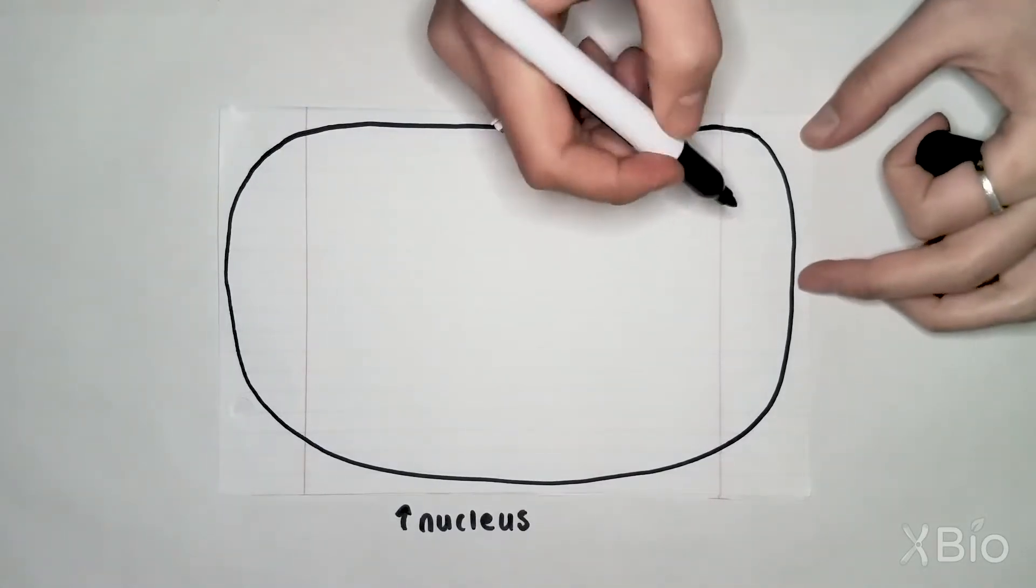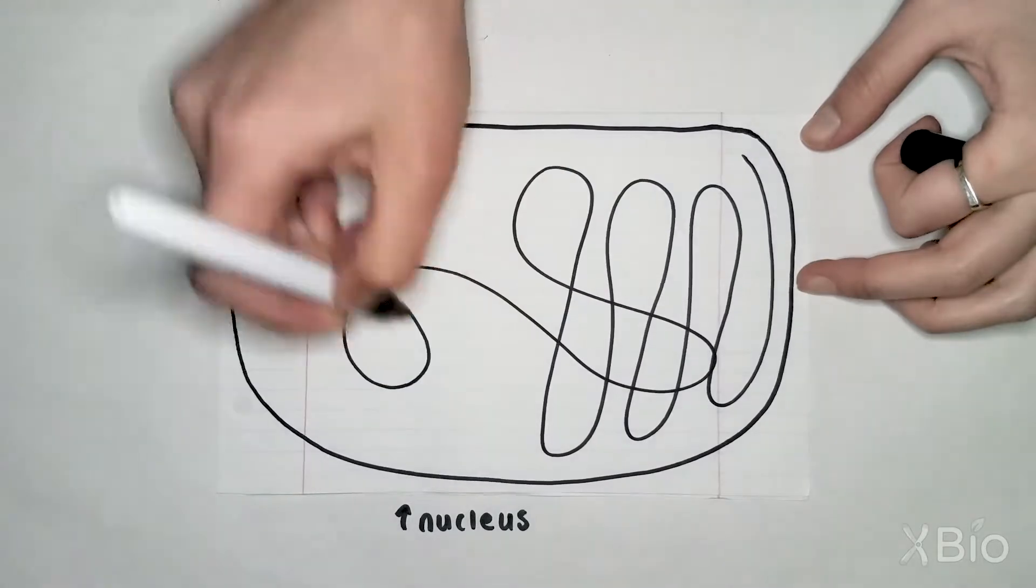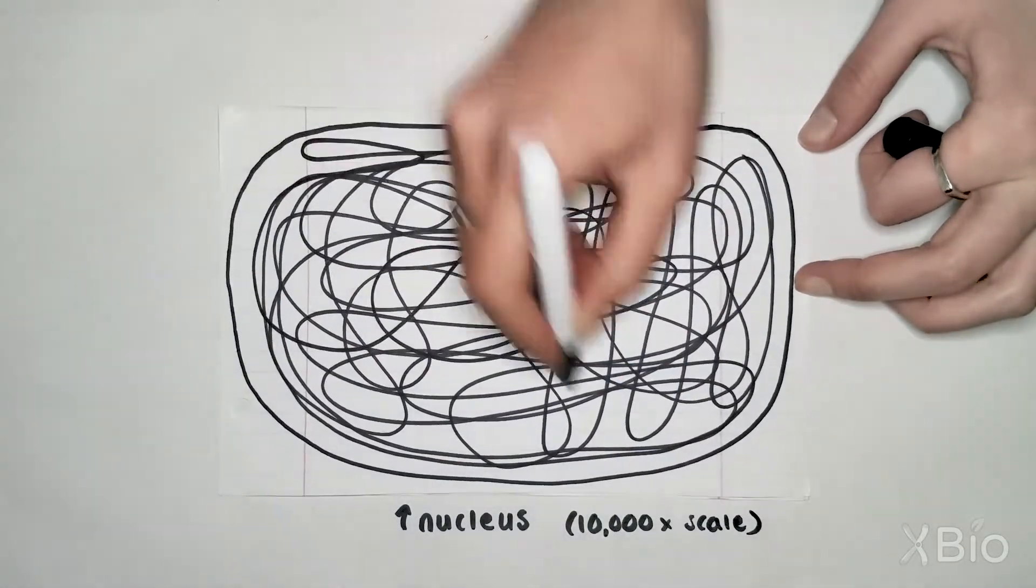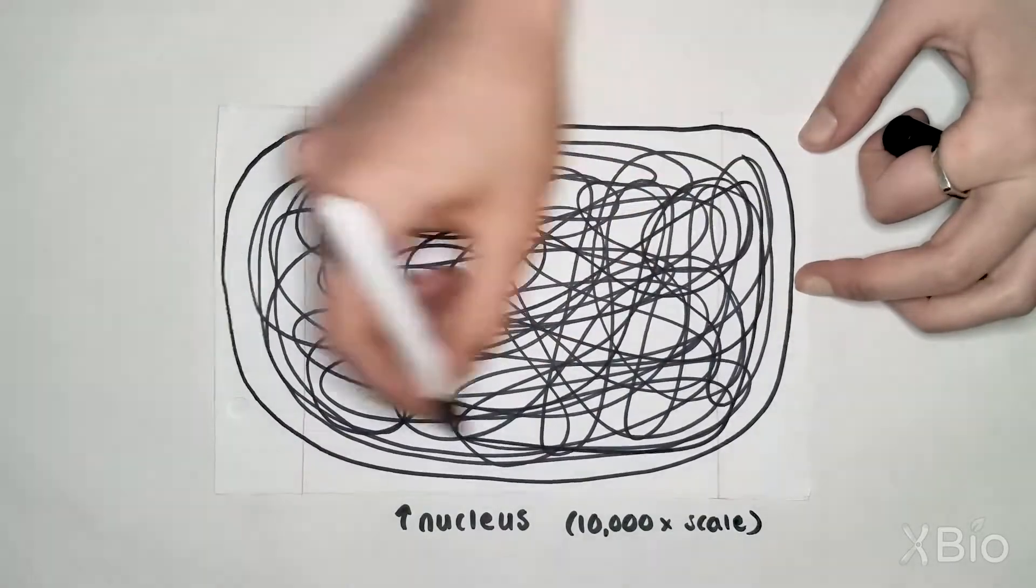If we blow up a nucleus 10,000 times its size, then it would fit half the width of this paper. On this scale, your DNA in total would be 20 kilometers long and would have to fit into this space without getting tangled.